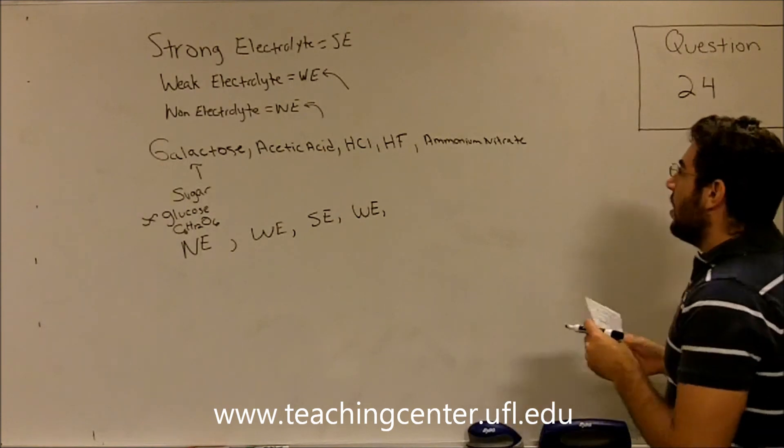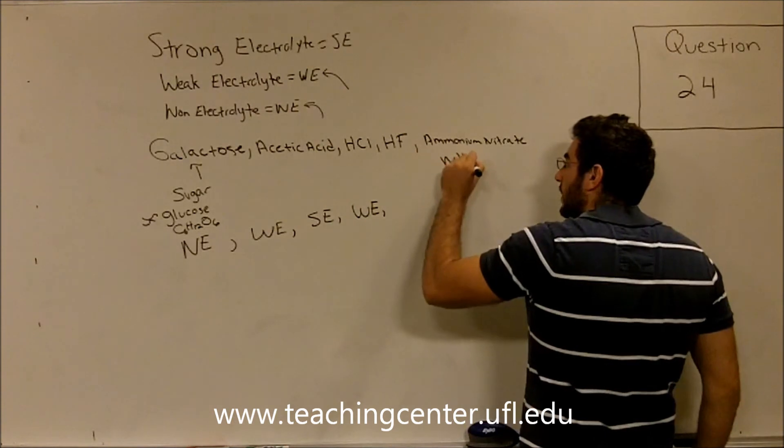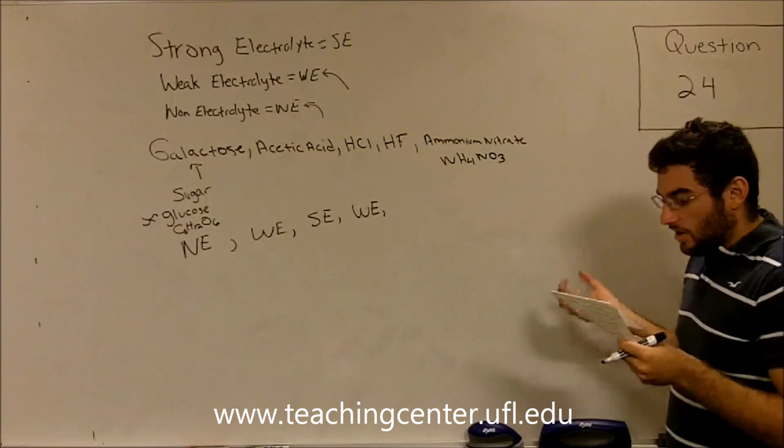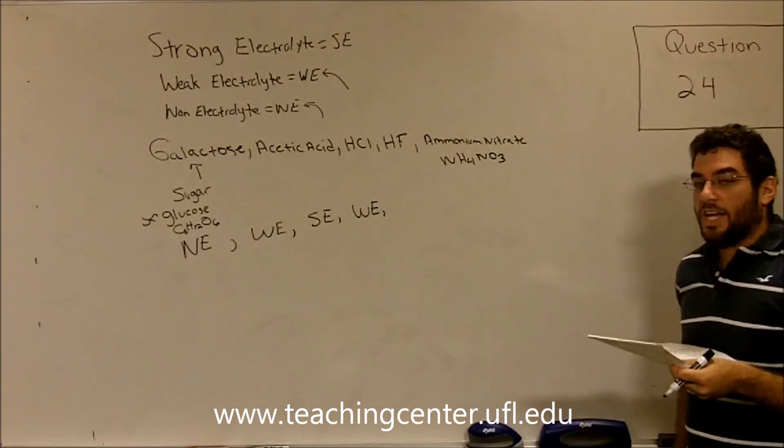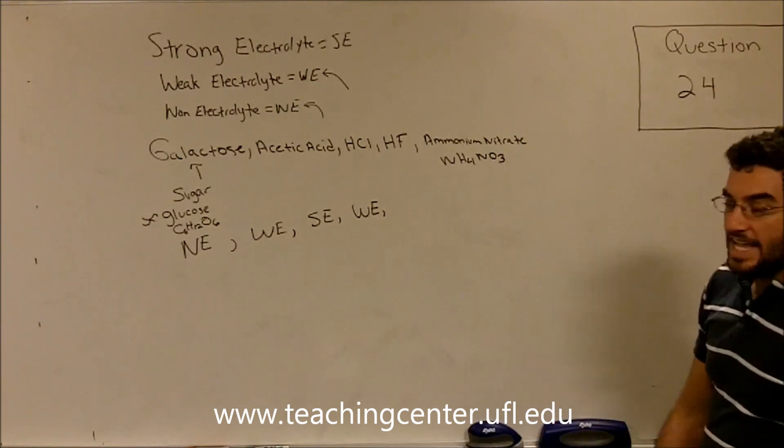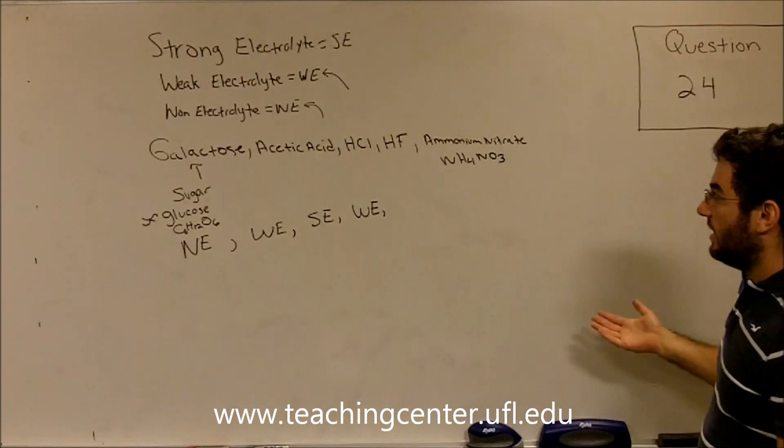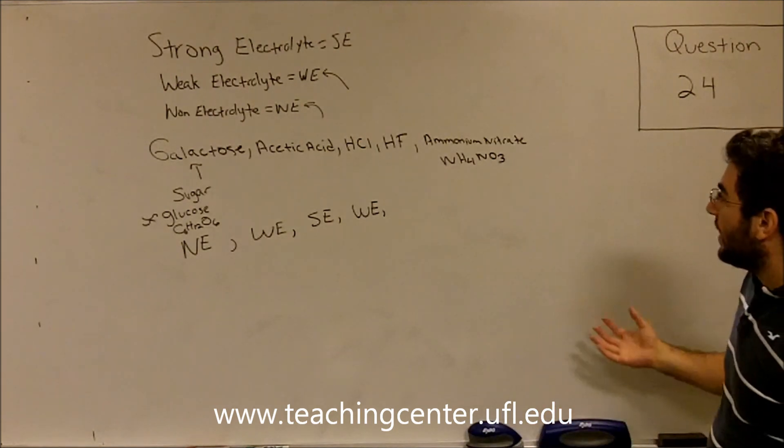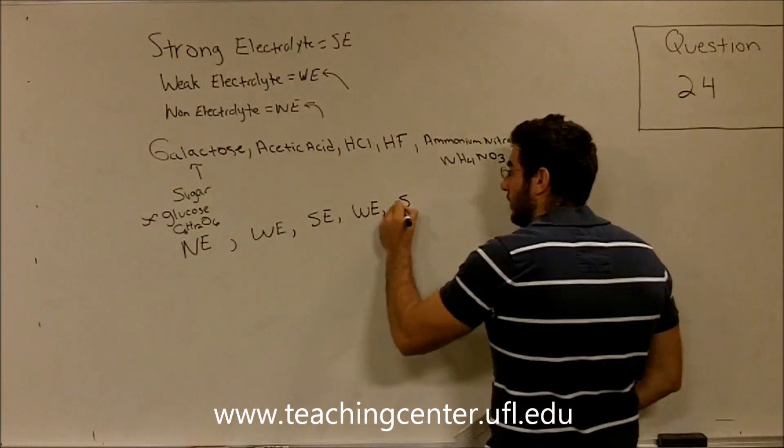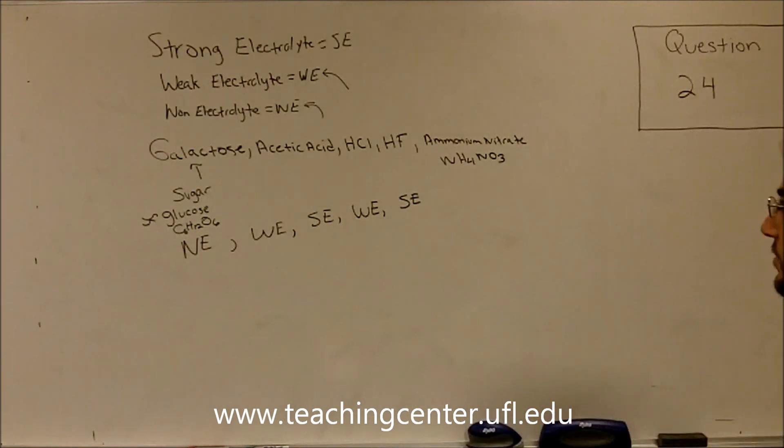Finally, we have ammonium nitrate. Ammonium nitrate is NH4NO3. But this will dissolve completely when we put it in solution. Because, remember, nitric acid, HNO3, is a strong acid. And ammonium, ammonium chloride, NH4Cl, could break up into their respective ions. So ammonium nitrate would be classified as a strong electrolyte.